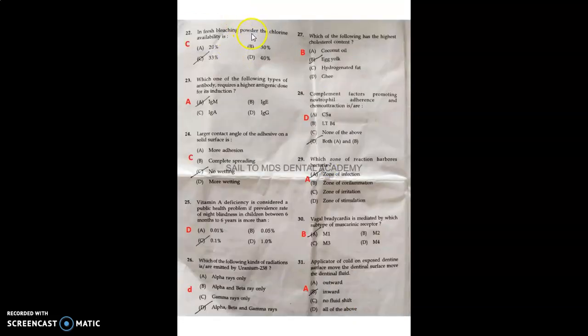In fresh bleaching powder, the chlorine availability is 33%. The type of antibody that requires a high antigenic dose is IgM. Large contact angle of adhesive on a solid surface indicates no wetting. Vitamin A is considered a public health problem if the prevalence is greater than 0.1%. Uranium-238 emits alpha, beta, and gamma rays. The food with highest cholesterol content is egg yolk. Complement factors promoting neutrophil adherence and chemotaxis are both C5a and LTB4. The zone of reaction that harbors bacteria is the zone of infection.